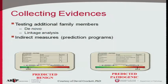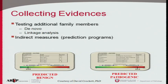We have an IRB in place for family studies, but we've only done a handful because families just aren't large enough to give us the information we need. However, the clinical lab can collect some evidence — for example, testing additional family members to show a mutation is de novo. In the pediatric population, parents are often very willing to provide samples so we can demonstrate de novo status.